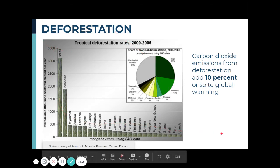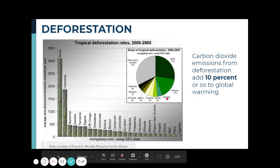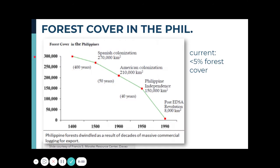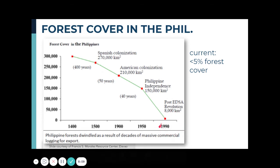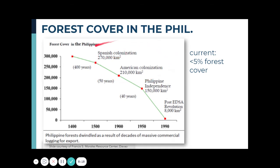How about deforestation? Trees are actually carbon sinks, meaning they absorb carbon dioxide. Deforestation can be thought of as increasing carbon dioxide emissions because you're removing the sink. Carbon dioxide emissions from deforestation account for about 10% of global warming. In the Philippines, from the 1400s up to the 1990s, the decline in forest cover is quite steep. Right now, we realize that forest is a very important mitigation parameter for global warming, and we're trying to bounce back, but we can't fully go back to how things were.